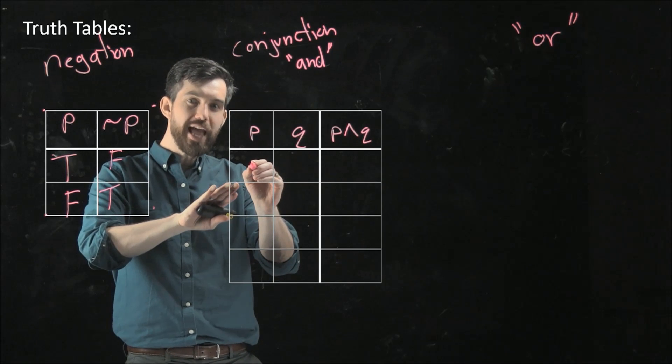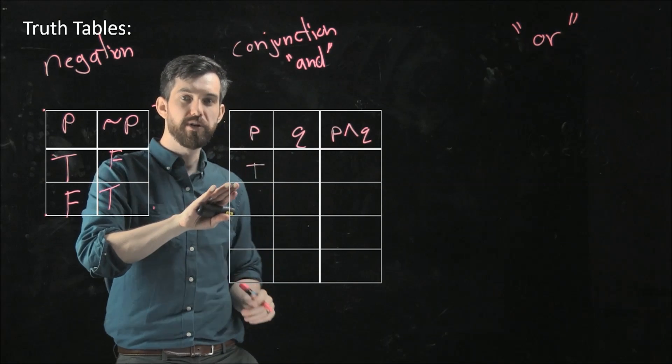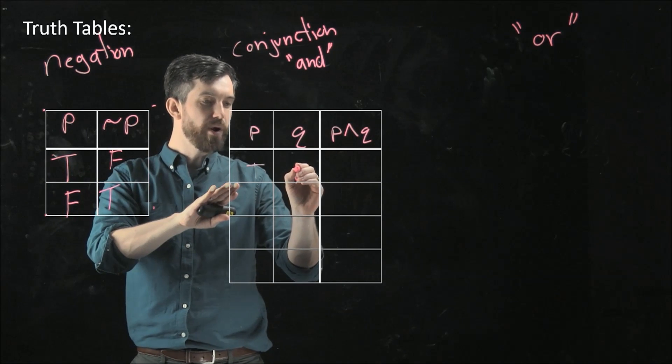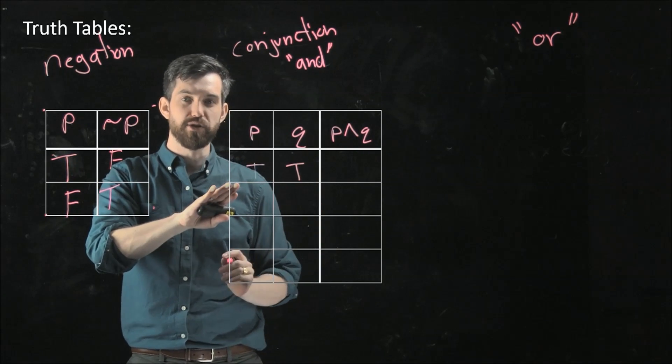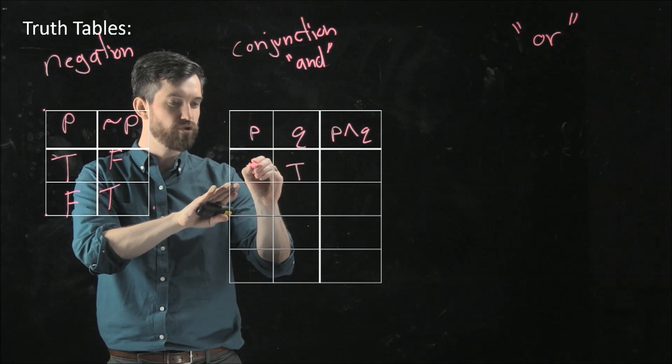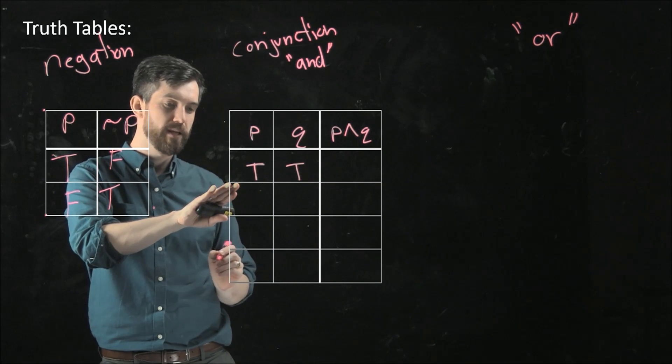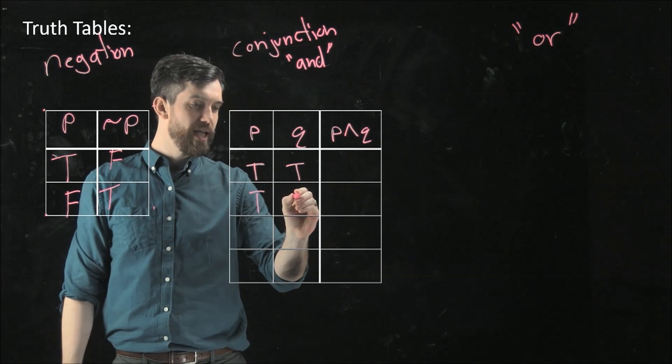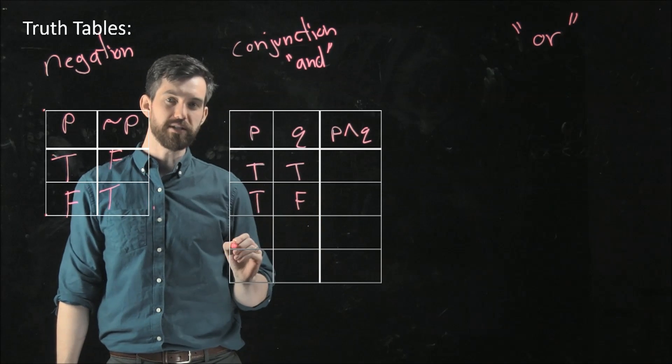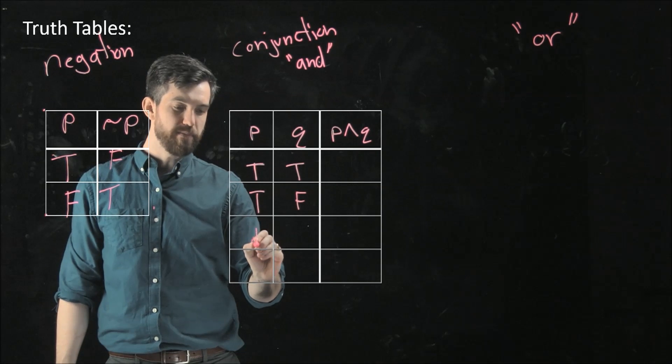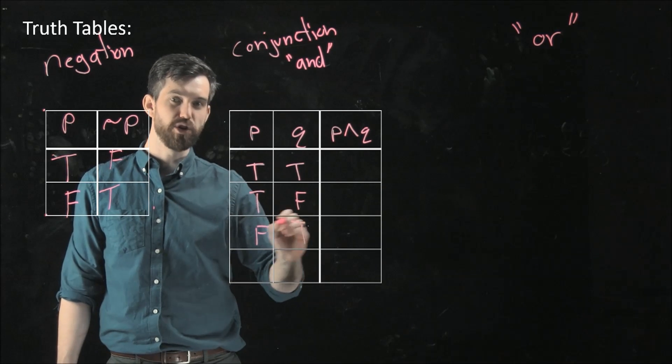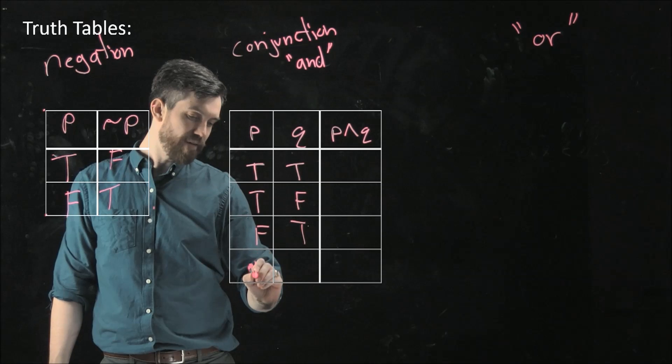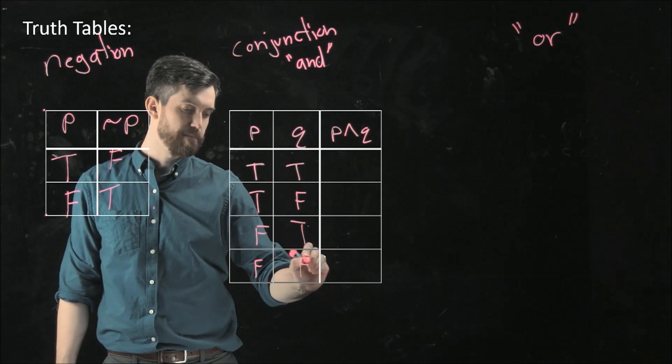But here I have a whole bunch of different possibilities. For example, I could have that my p statement was true, but then my q would also have the possibility of either being true or false. So I'm going to say that I have it true and true for both of them. However, I could also have that my p was true and that my q was going to be false. I could have it that my p was going to be false and my q was going to be true. And the final possibility is it could be false for both of them.